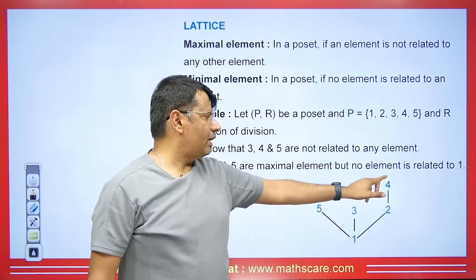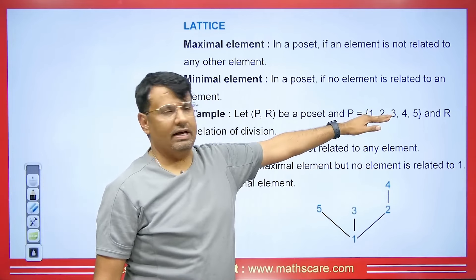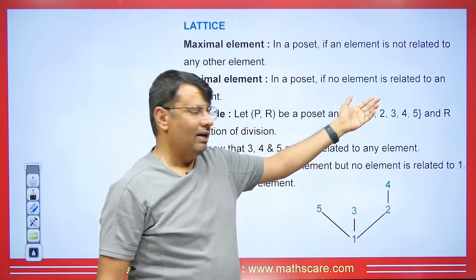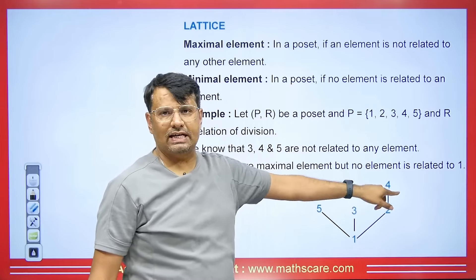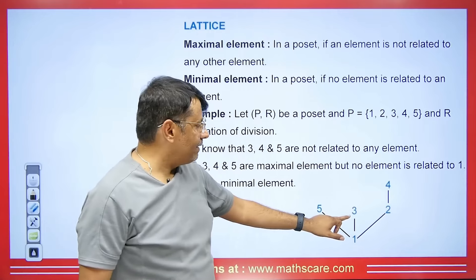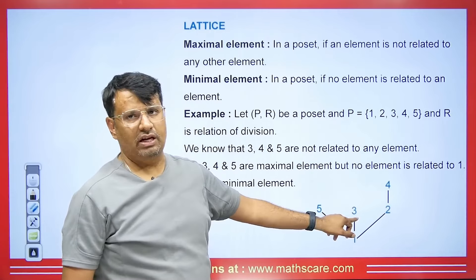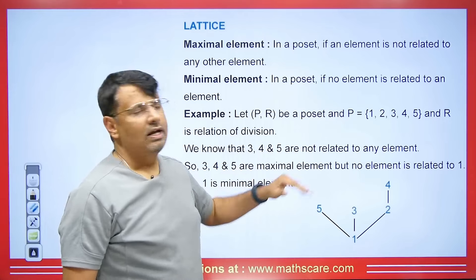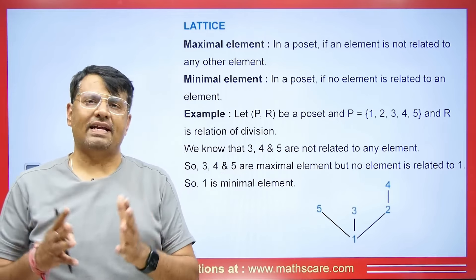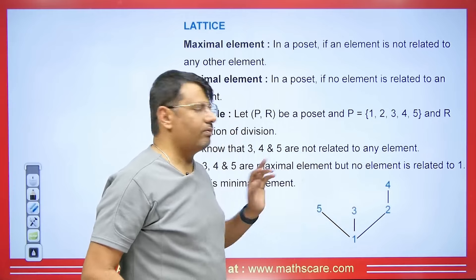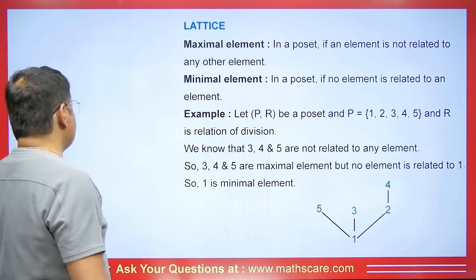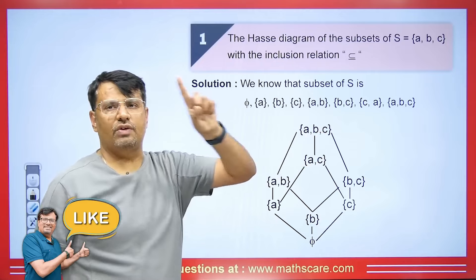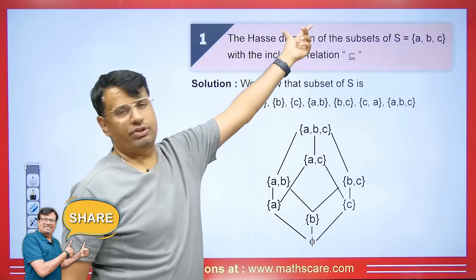In the Hasse diagram, the relation is always defined from bottom to top. There is nothing above 4, so it becomes a maximal element. There is nothing above 3, so it becomes a maximal element. There is nothing above 5, so 5 will also become a maximal element. In this Hasse diagram, we have 4, 3, and 5 as the maximal elements.